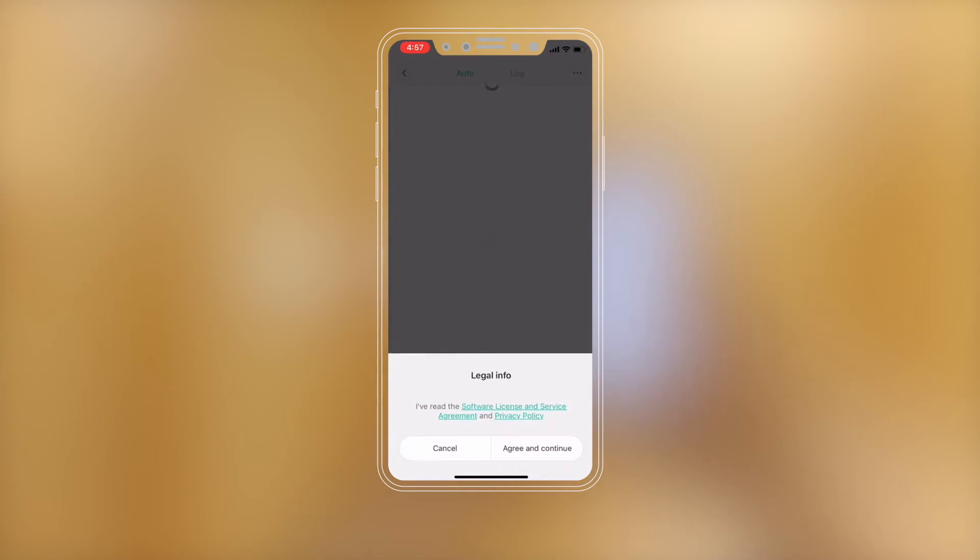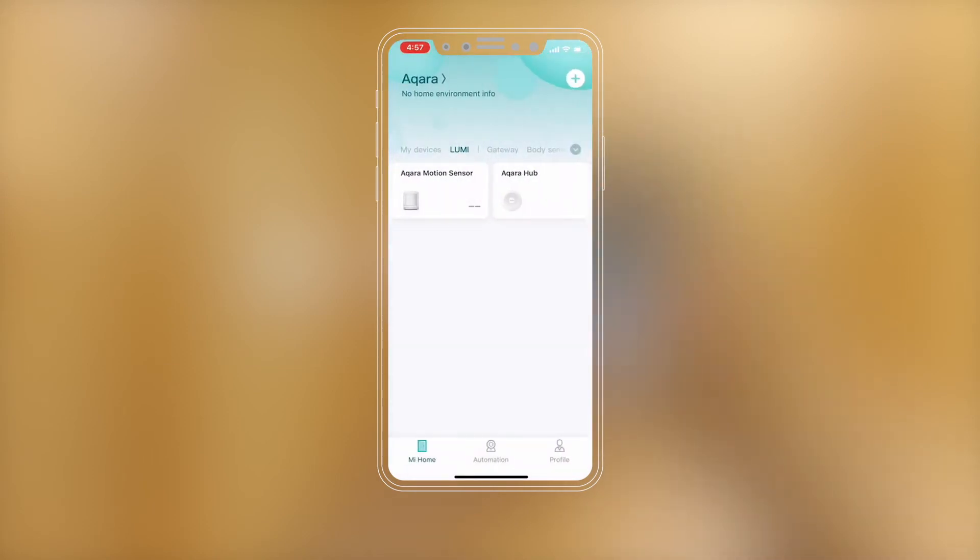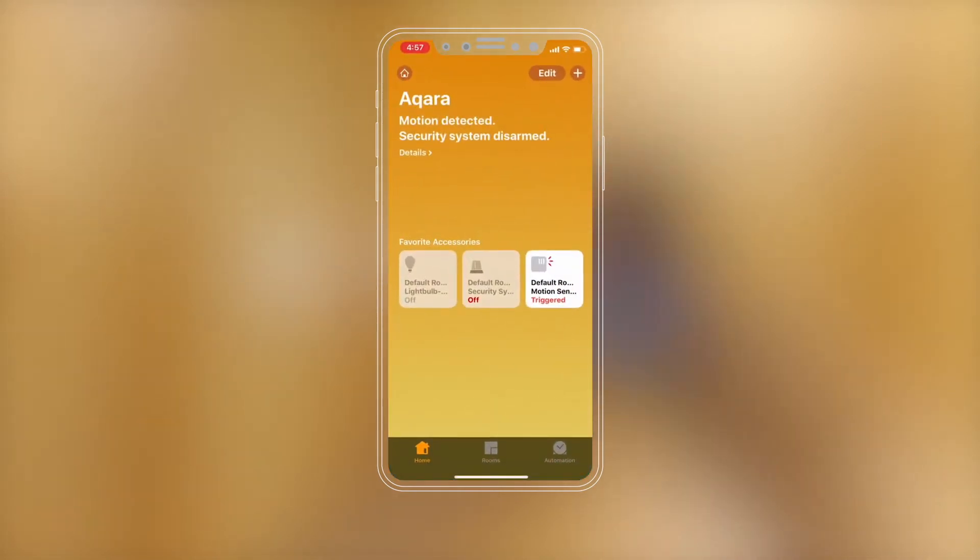After the accessory is added, you can check the accessory status in the Mi Home app or in the Apple Home app.